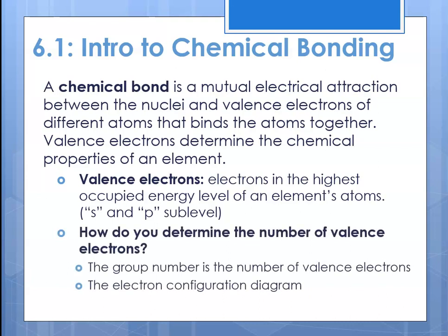How do you determine the number of valence electrons? The group number tells you the number of valence electrons. You could also do an electron configuration diagram, but that takes more time. Just looking at the group number in the periodic table is much, much easier.